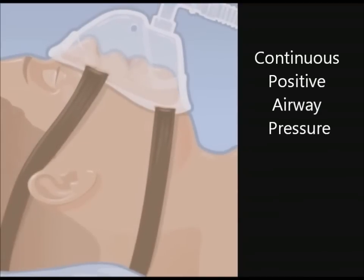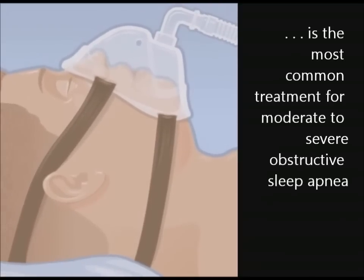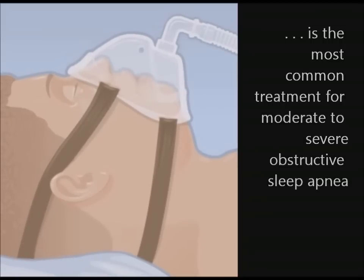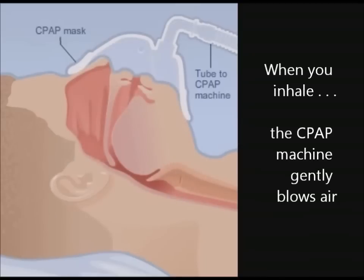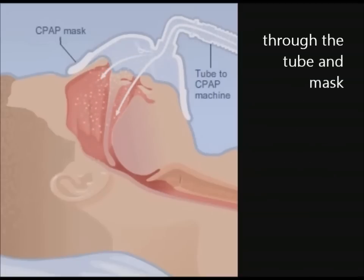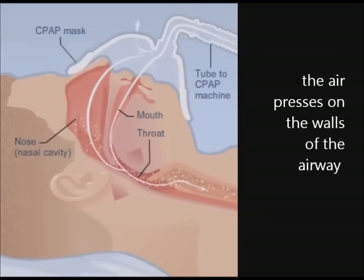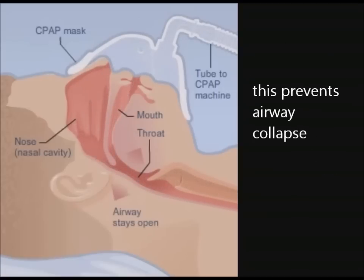Continuous positive airway pressure, also known as CPAP, is the most common treatment for moderate to severe obstructive sleep apnea. In this example, a CPAP mask fits over your nose and mouth. When you inhale, the CPAP machine gently blows air through the tube and mask into your nose, mouth, and throat. The air presses on the walls of the airway, keeping it open. This prevents airway collapse.